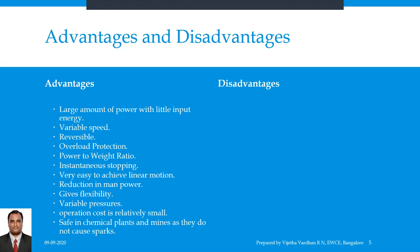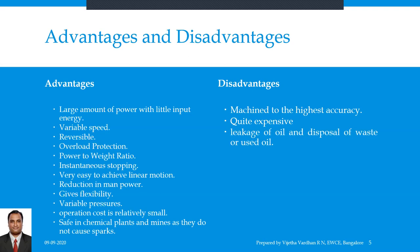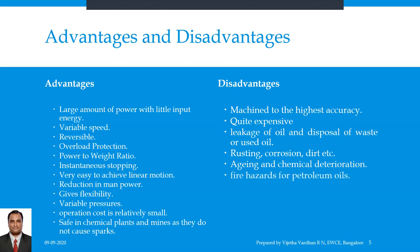The disadvantages or limitations include: hydraulic elements must be machined to the highest accuracy, requiring better machine tools and equipment. Hydraulic equipment and devices are quite expensive, so the initial investment is very high. One major problem is leakage of oil and disposal of waste oil. Hydraulic elements must be specially treated to protect against rusting, corrosion, dirt, etc. Hydraulic oil can disintegrate due to aging and chemical deterioration. Petroleum-based hydraulic oil may pose fire hazards, limiting working temperature — though this can be overcome by using synthetic fire-resistant oils. Under high pressure, leaking oil can shoot out at high velocity, potentially harming those near the leakage point.